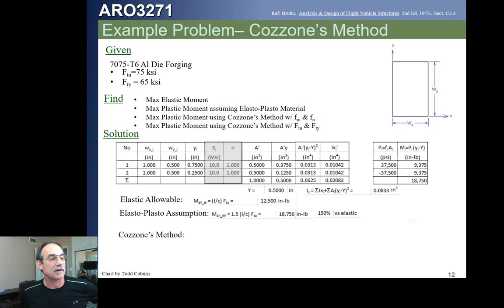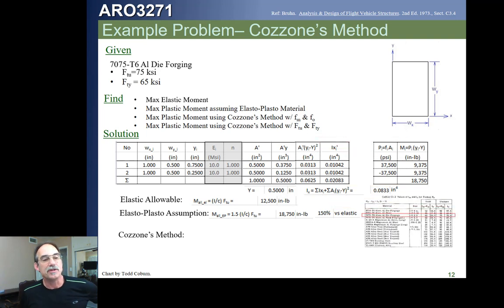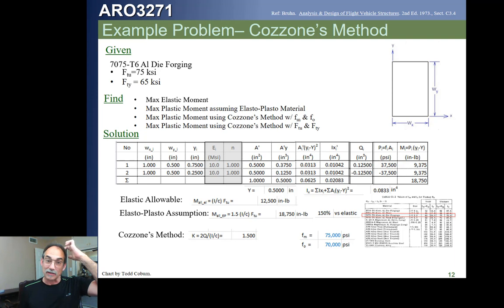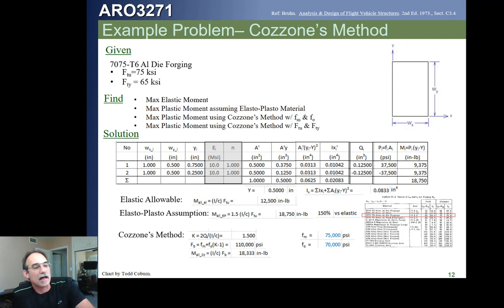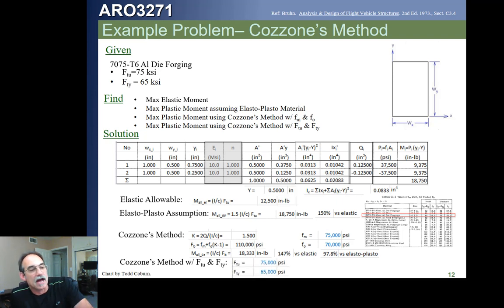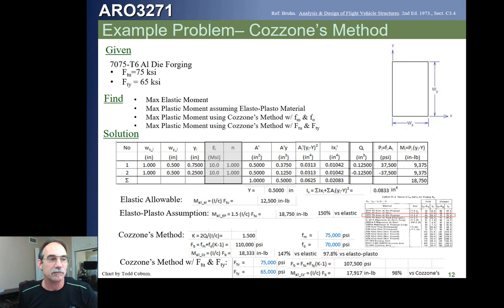Now we do a Cozzone analysis: we go find the material, choose it, find Fm and Fo, and using those we calculate the modulus of rupture after computing the Cozzone shape factor. We find we get the same Cozzone shape factor as the plastic bending shape factor, but a different allowable — because Cozzone's method uses Fm and Fo, not Fm and Fm. Our Cozzone allowable is close to but slightly less than our elastoplastic analysis. If we used the approximation Fm = Ftu and Fo = Fty, we'd get fairly close numbers, which are slightly conservative compared to using Cozzone's tabulated Fm and Fo.